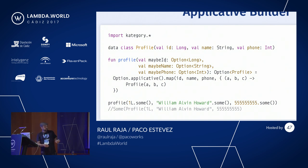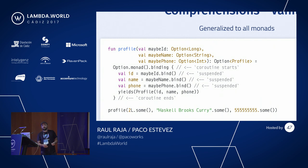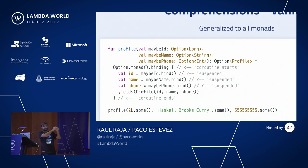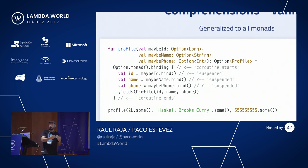Besides the applicative builder, we have for-comprehensions in Kotlin, and we are exploiting the coroutine system to actually implement monadic bind. Similarly, if you use a Scala-like for-comprehension, you'll see you have left arrow which binds the value resulting from flatMap on the left side, and it gives you this imperative style way of operating over monads.